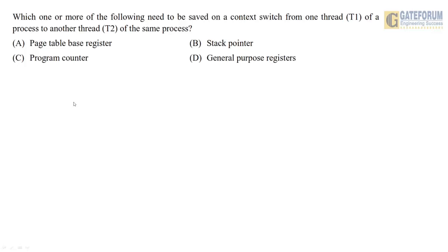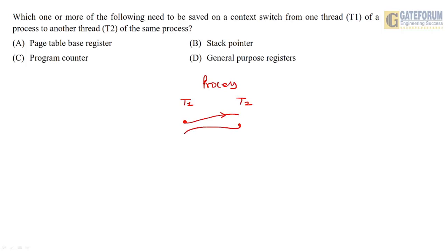The first question asks: which one or more of the following need to be saved on a context switch from one thread T1 of a process to another thread T2 of the same process? So if we are doing context switching between threads — suppose we have a process with two threads T1 and T2, and we need to switch from T1 to T2 — which of the following do we need to save?